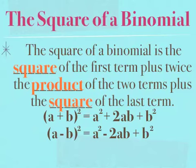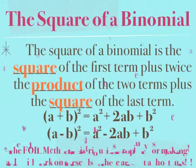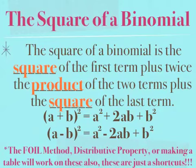Something important to point out is that the FOIL method, distributive property, or making a table are also going to work on these. These special cases are just shortcuts. If you don't remember them, you can still use the FOIL method, the distributive property, or make a table. You could still write a plus b times a plus b and you would end up with the same answer.